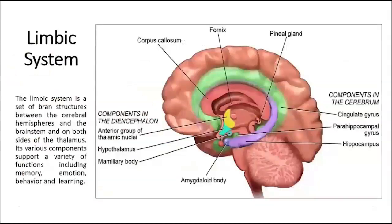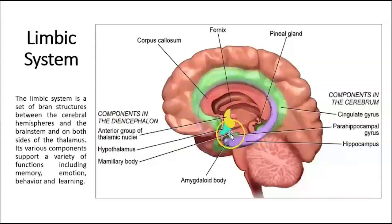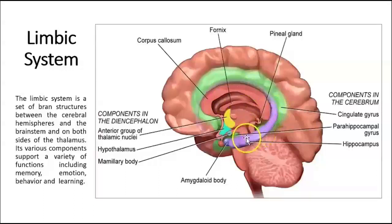The limbic system is a very important area for emotion and learning. There are multiple areas associated with it, but three that everyone agrees on are the cingulate gyrus, the hippocampus, and the amygdala. The cingulate gyrus sits on top of the corpus callosum. The amygdala is in charge of emotion, and the hippocampus is very important in memory.